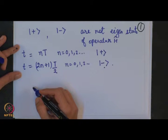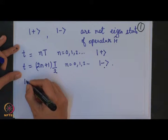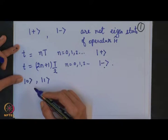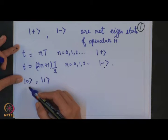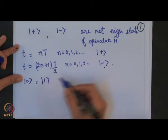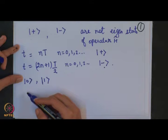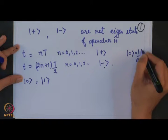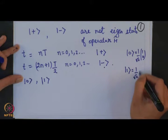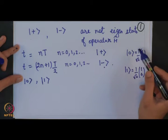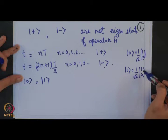Now let us get started. We assume that the Hamiltonian operator has eigenvectors |0⟩ and |1⟩. In the previous set of examples the eigenvector notation used was 1 and 2; here we have 0 and 1. We assume these eigenvectors are orthonormal and normalized.